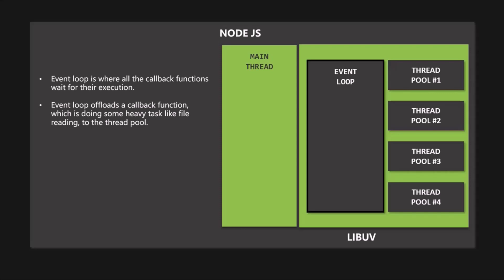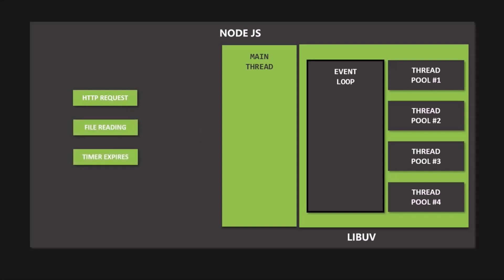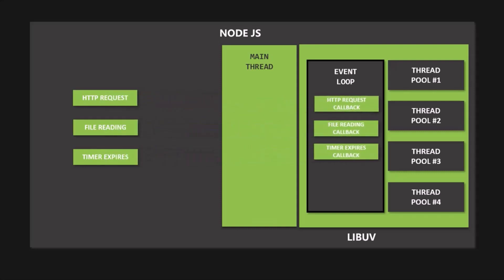That will be executed in the thread of the thread pool. Node.js uses event-driven architecture and is built around callback functions. Whenever something happens — for example, when we receive an HTTP request on the Node.js server, or when a file is finished reading, or when a timer expires — all these tasks will emit events as soon as the task is complete. The event loop picks up these events, stores the callback functions associated with each event, and eventually pushes all these callbacks to the main thread for execution.